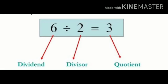Next 6 divided by 2 equals to 3. Here 6 is called as dividend. 2 is called as divisor. And 3 is called as quotient. These are the terms that are used in division.